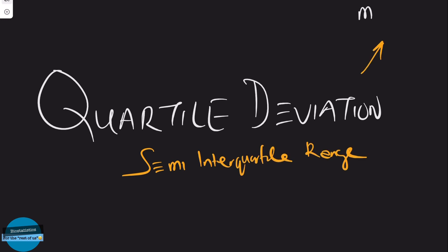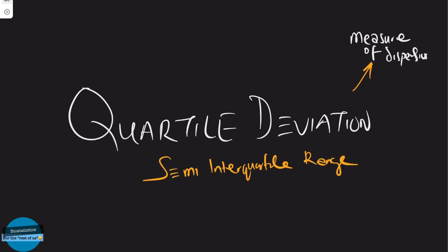This is a measure of dispersion that quantifies the spread of data around the median.